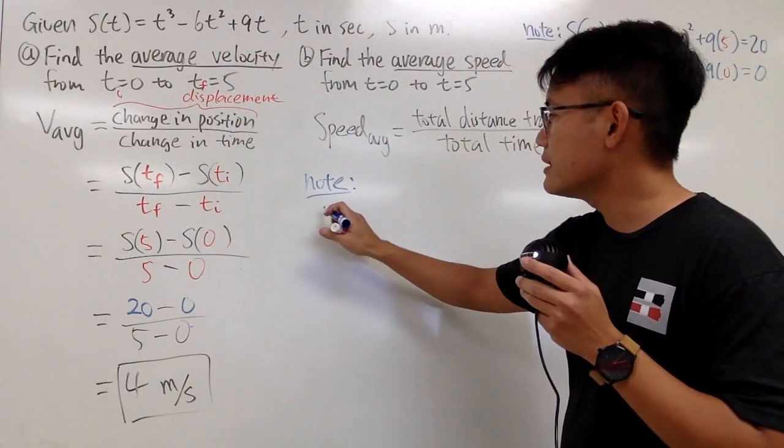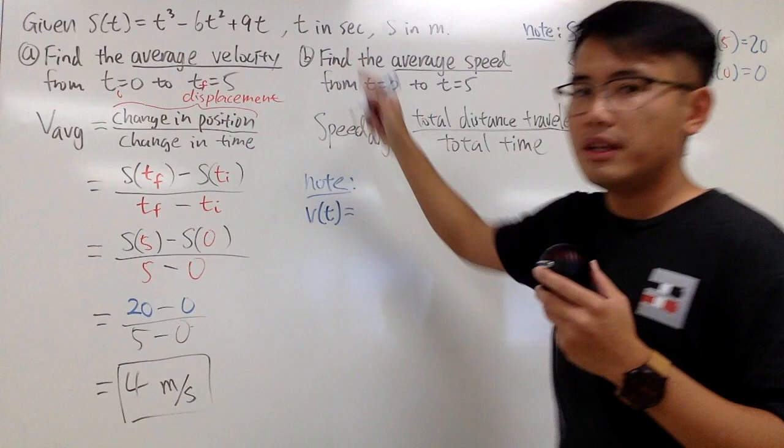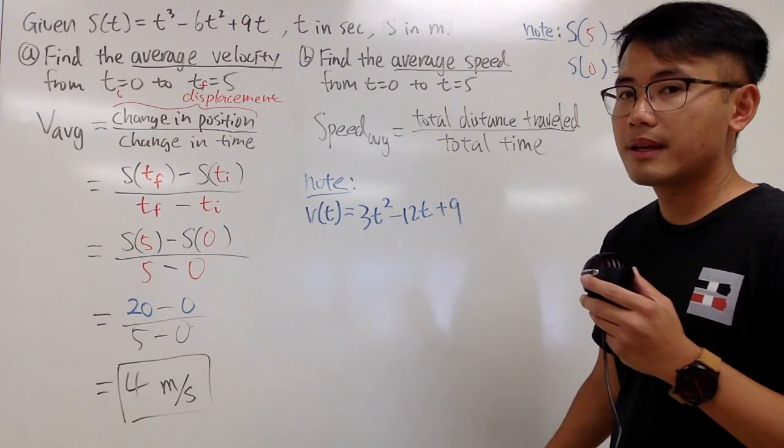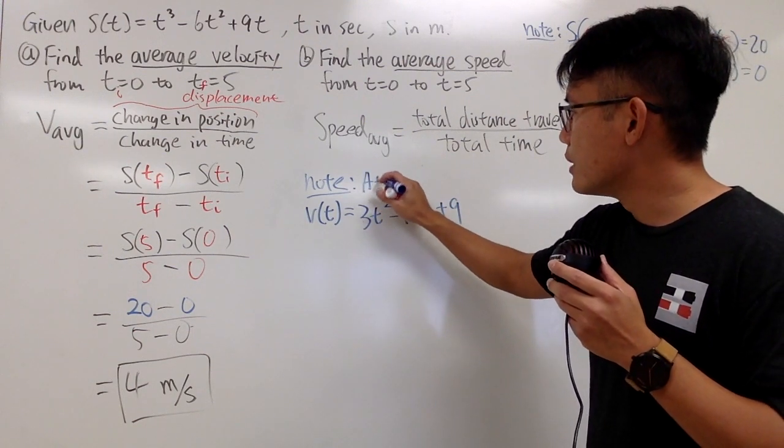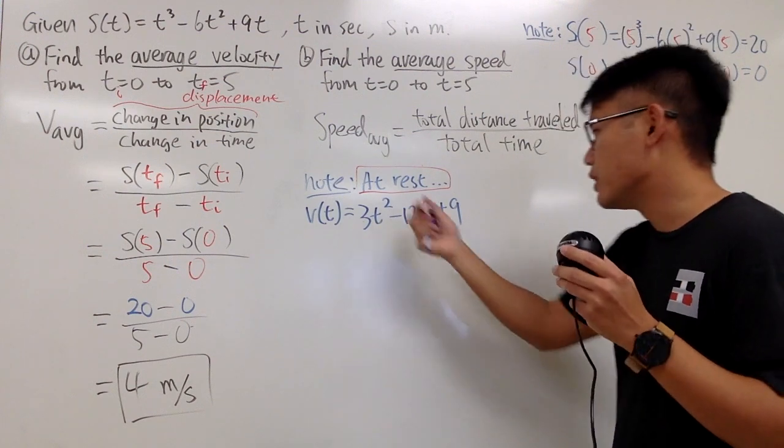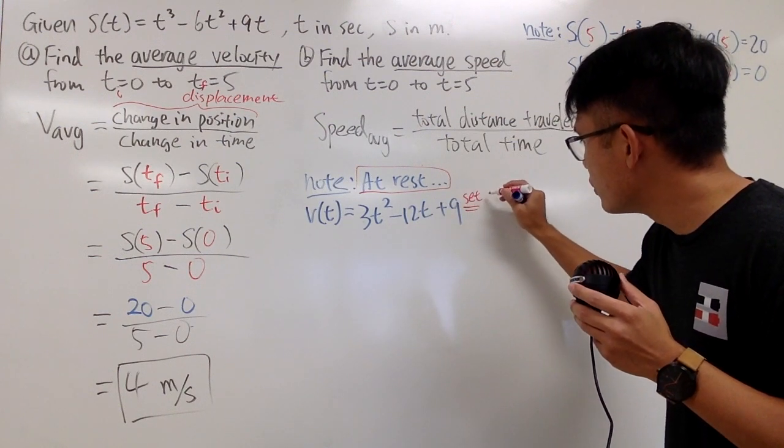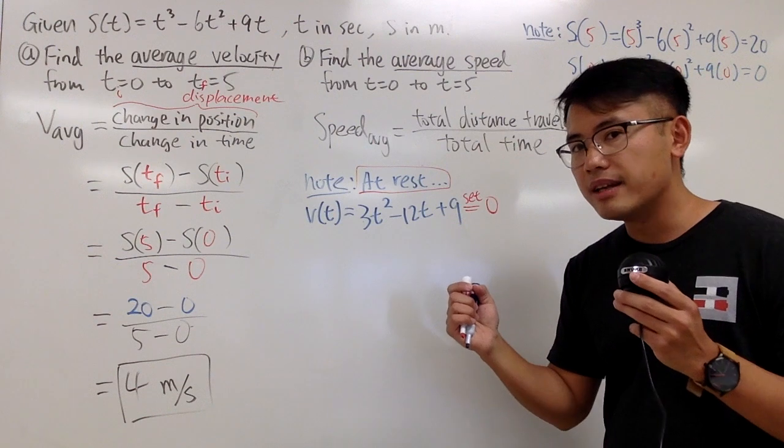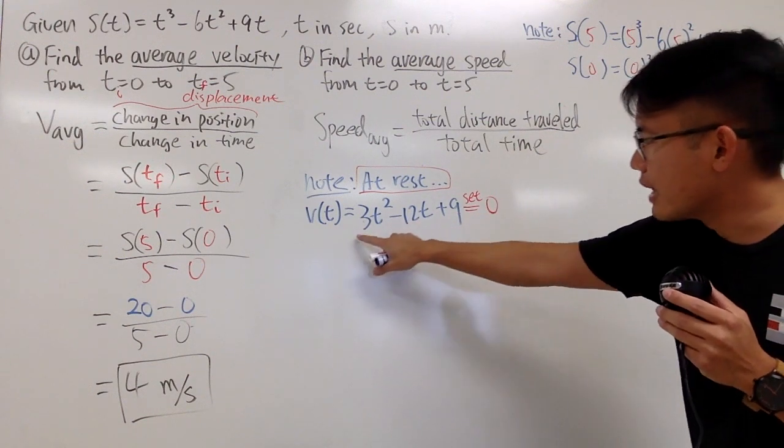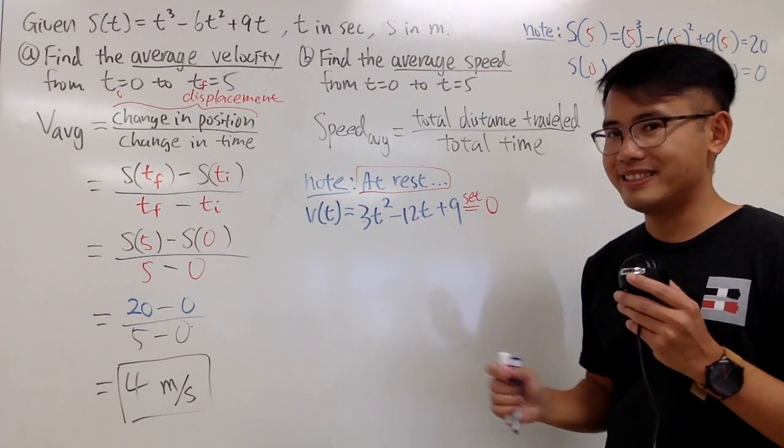So I will tell you, we know s of t is that. Therefore, v of t is equal to, just do the derivative of this, and we get 3t² - 12t + 9. And I would like to know at rest, in order for me to figure out when did I stop. In order for me to figure out when did I stop, we set this equal to 0, because at that instant this gives you the instantaneous velocity.